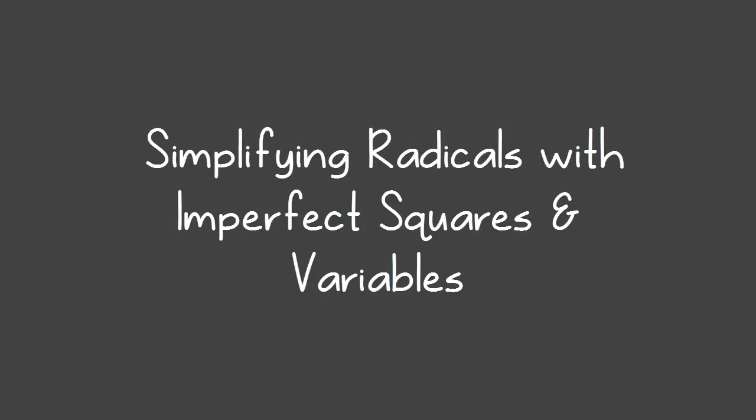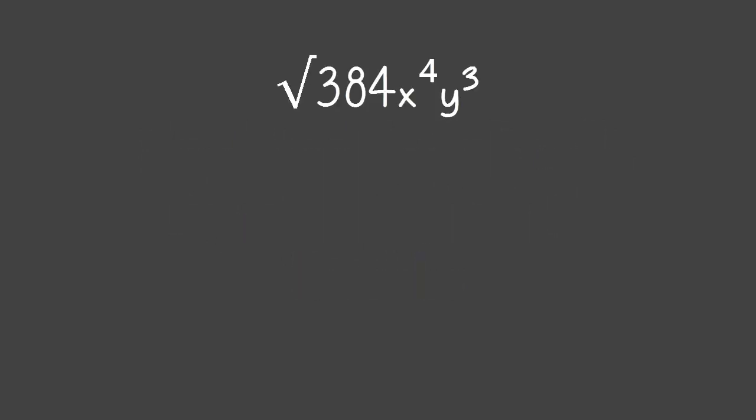Simplifying radicals with imperfect squares and variables. When simplifying imperfect squares, it is best to begin by finding the prime factors of the number. In this case, 384 is inside the radical.